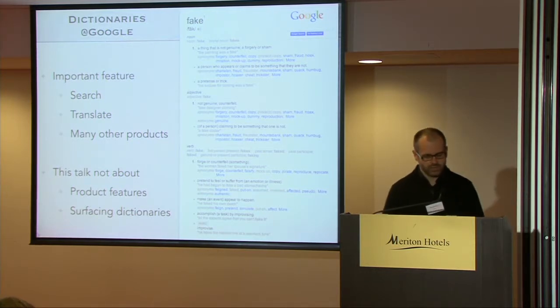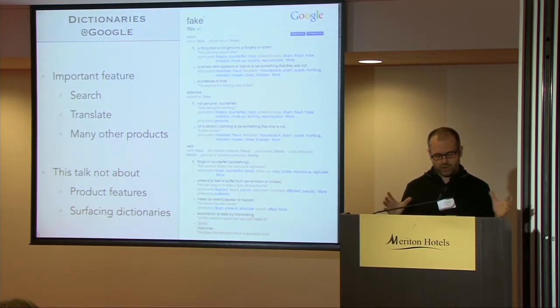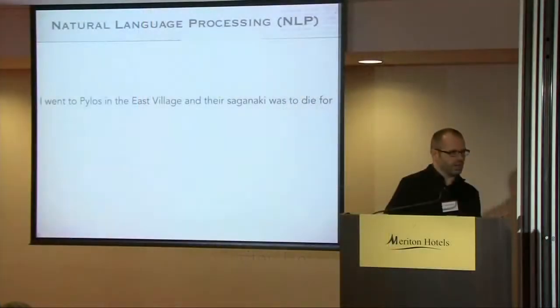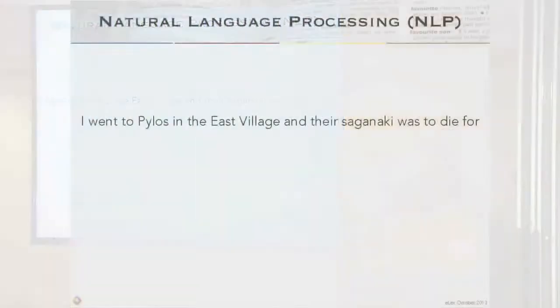This is not only true for monolingual search. Translation has a very similar API — if you enter a word, you get a nice multilingual or bilingual dictionary entry. Many other products use dictionaries as a core feature to give users information. This talk, though, is not about how we surface these dictionaries. Instead, it's about how we can leverage all this lexical knowledge to improve core natural language processing tasks.